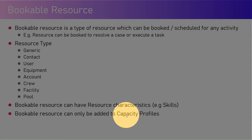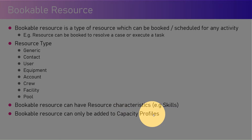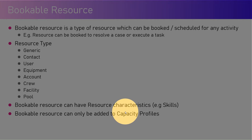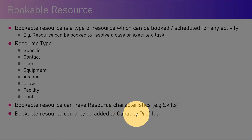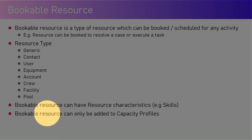A bookable resource can only be added to a capacity profile. A capacity profile sets up parameters for a particular agent's workload. For example, if Girish can work on only two high-priority cases within a day, you create a capacity profile called 'high priority cases' and specify the quantity as two, then assign the user as Girish. Remember, the user can only be assigned to a capacity profile if that user is a bookable resource — you can't add just any user from your organization into a capacity profile.